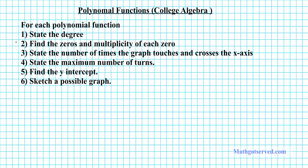So in this example we're going to find the following. For each polynomial function: state the degree, find the zeros and multiplicity of each zero, state the number of times the graph touches and crosses the x-axis, state the maximum number of turns, find the y-intercept, and sketch a possible graph. Let's start with problem number one.